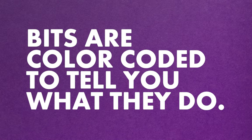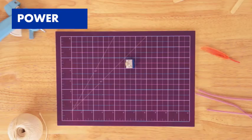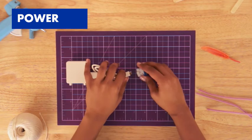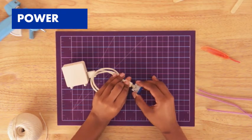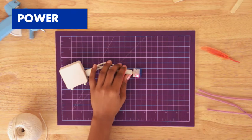You'll notice there are a few different colors of bits. That's because they're color-coded to tell you what they do. Blue bits are power bits. They connect your circuits to a power source and send the signal that runs through your circuit.